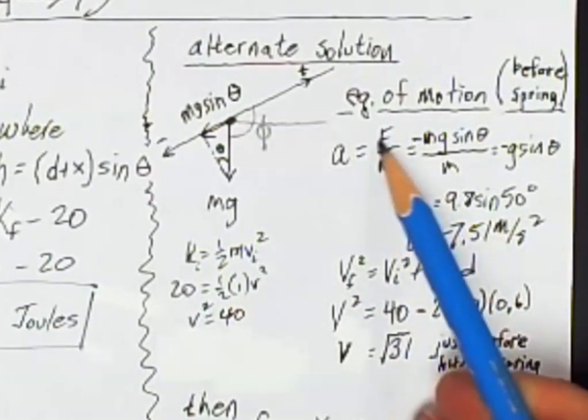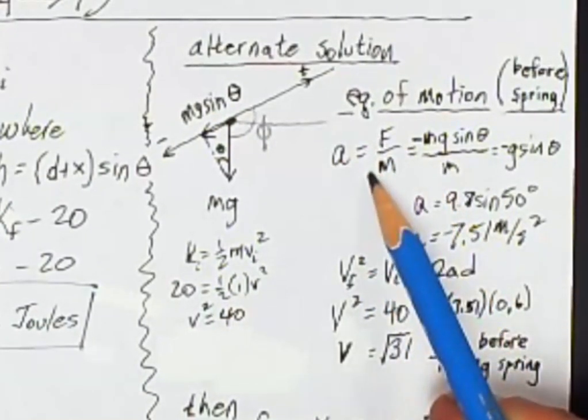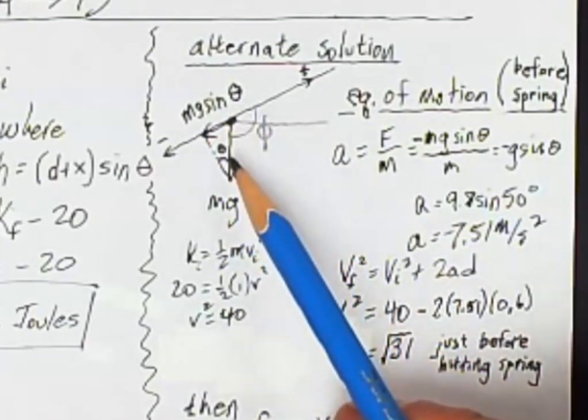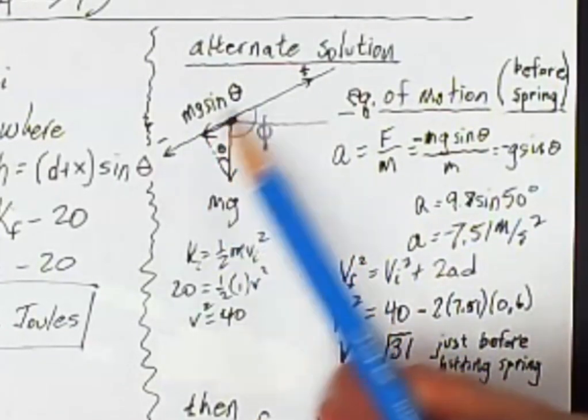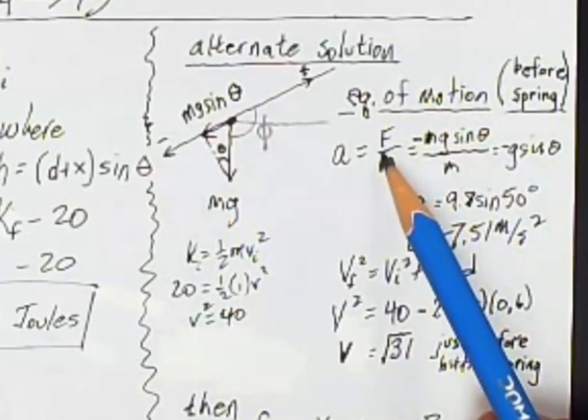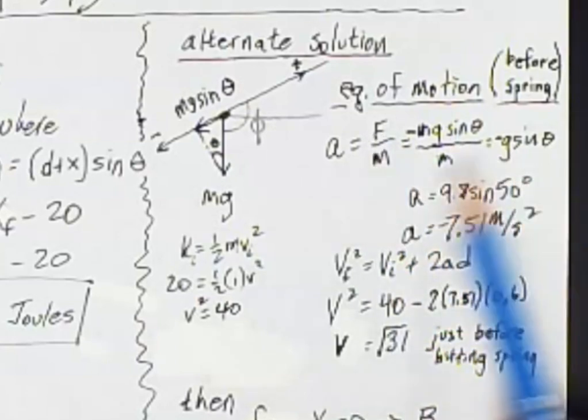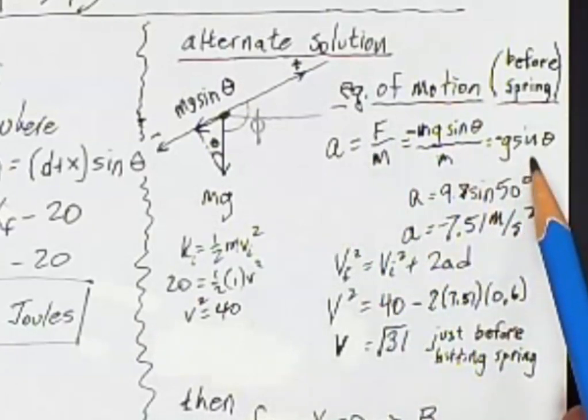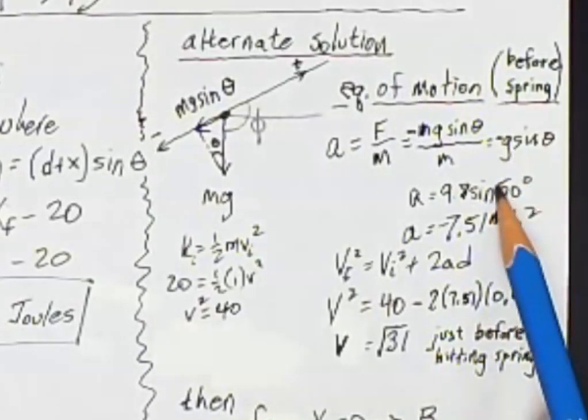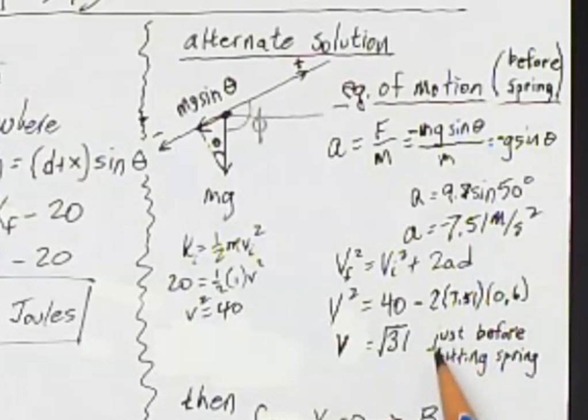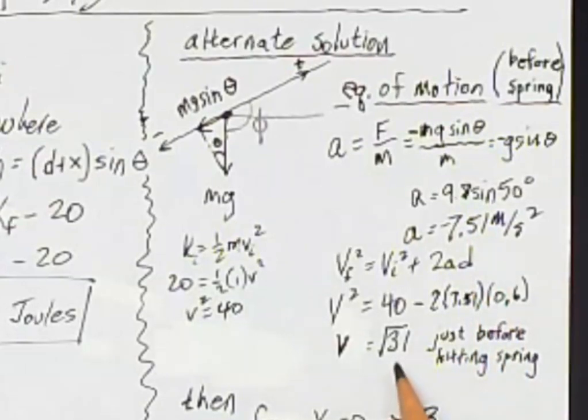So if you chose to do it that way, first you would figure out what is the acceleration of the block. So here is my force along the direction of movement. It is the component of the weight that is along the ramp. So my force is mg sine theta. This is Newton's second law, of course. The acceleration is g sine theta down the ramp. Now I can use equations of motion to figure out how fast it's moving when it reaches the spring. So the square root of 31 meters per second is just before it hits the spring.